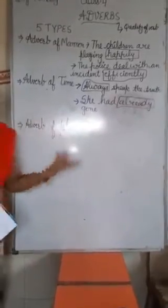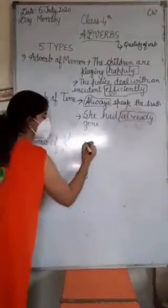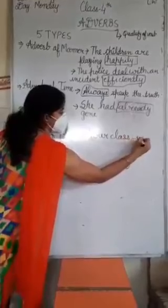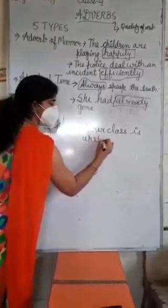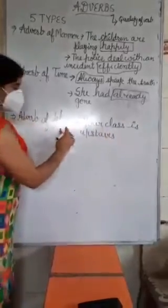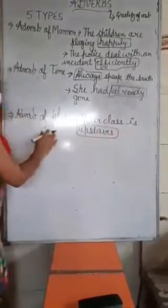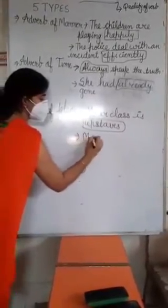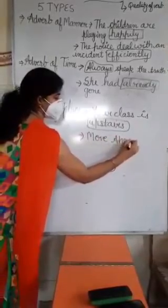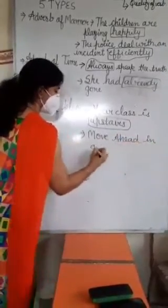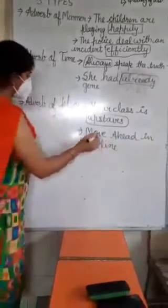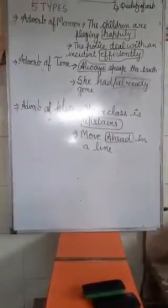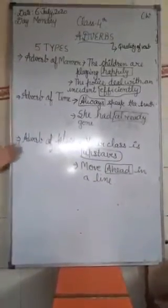Now, Adverb of Place. Place — for example, upstairs — here upstairs is the Adverb of Place. Another example: Move ahead in a line. So ahead indicates place. So these are the three types: Adverb of Manner, Adverb of Time, and Adverb of Place.